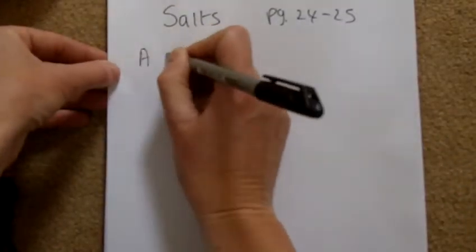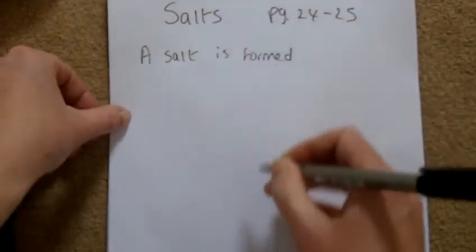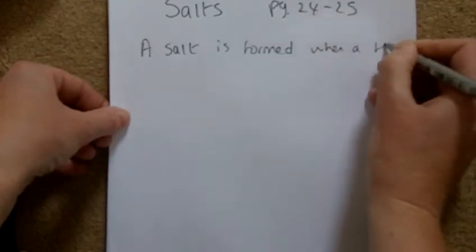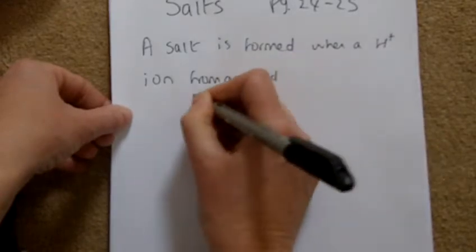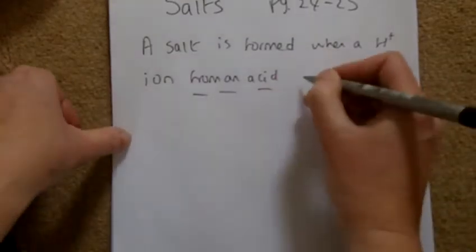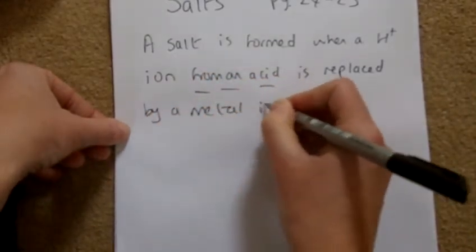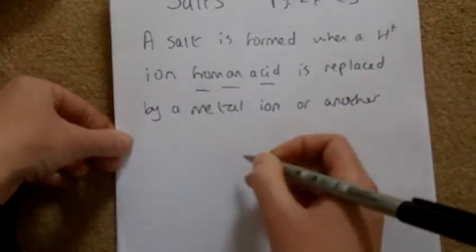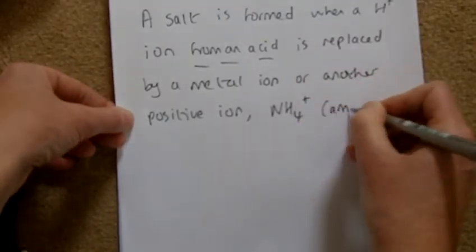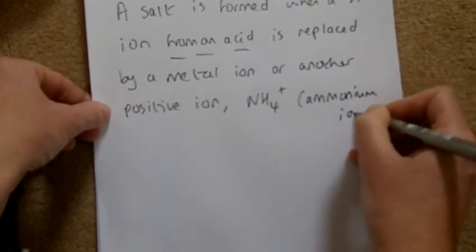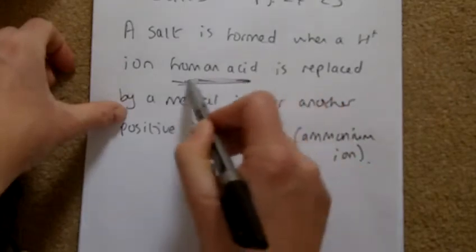This definition comes up in nearly every exam paper — every Atoms, Bonds and Groups exam paper. A salt is formed when a H+ ion from an acid — everybody always forgets that part, so don't forget it — is replaced by a metal ion or another positive ion. A common example is the ammonium ion.